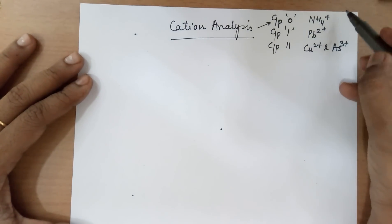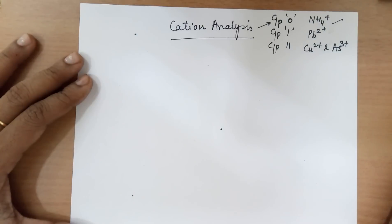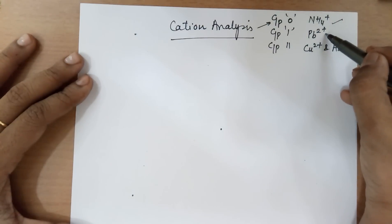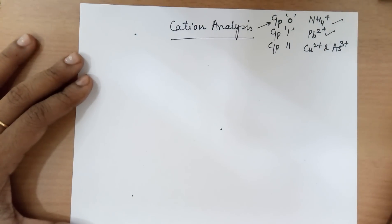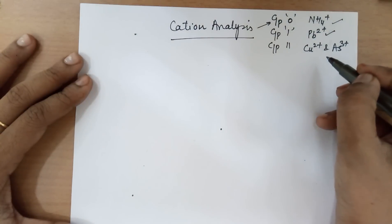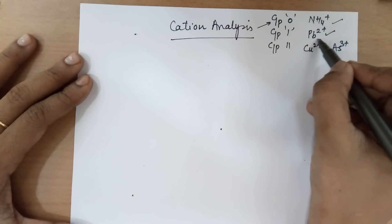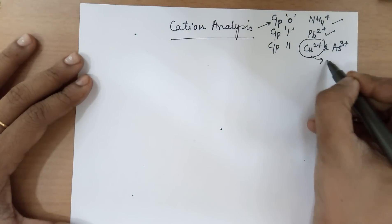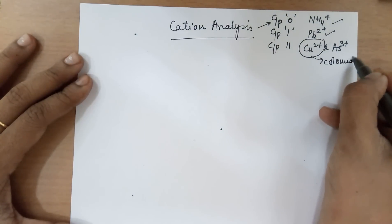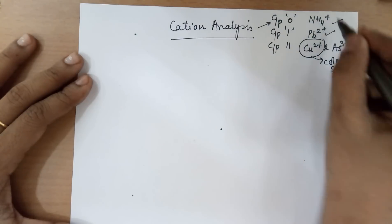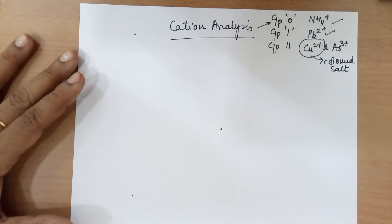The group 0 has got only one cation, ammonium. Group 1 has got one cation, lead. Group 2 has got two cations, copper and arsenic. Only copper has a colored salt. The rest of the salts, the three of them, would be white salts.